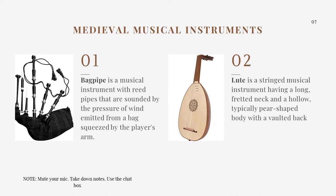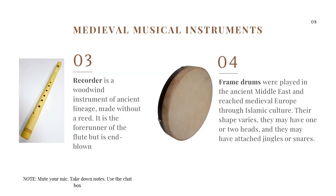The lute is pear-shaped and its fret is bent back at the end. Next we have the recorder, which is a woodwind instrument of ancient lineage made without a reed — the forerunner of the flute. Lastly we have the frame drums, which were played in the ancient Middle East and reached medieval Europe through Islamic culture. Their bodies may have one or two heads, and they may have attached jingles or snares — usually with bells attached so they jingle when struck.